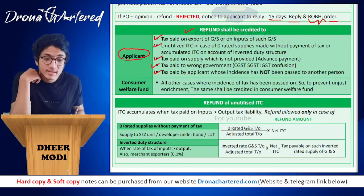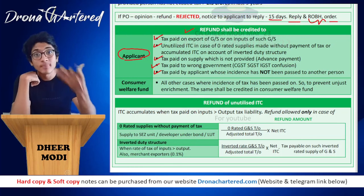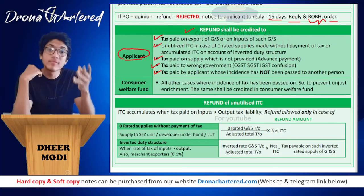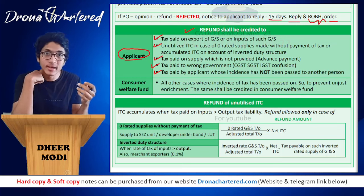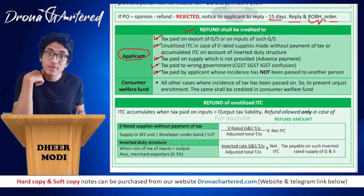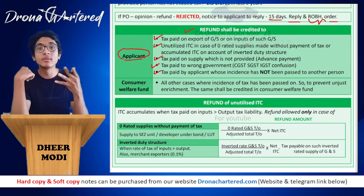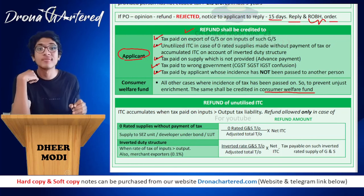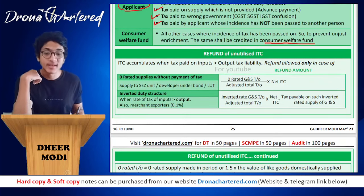In all other cases where the incidence of tax has been passed on to the customer or another person, if you give the refund to the applicant himself — since he has already passed on the incidence of tax — he has already received the benefit of it, so giving him the refund would be unjust enrichment. To prevent unjust enrichment, the refund in such cases shall be credited to the Consumer Welfare Fund.